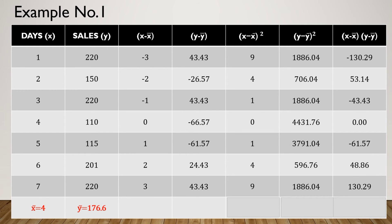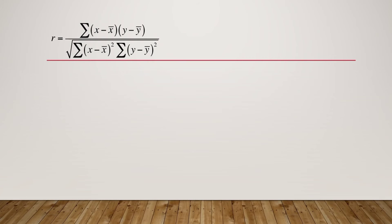After computing all products, we need the summations. The summation of all (x minus x-bar) squared equals 28. The summation of all (y minus y-bar) squared equals 15,183.7. The summation of the product of the two columns equals negative 3.0.